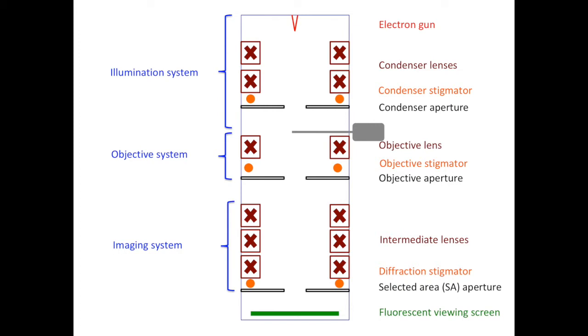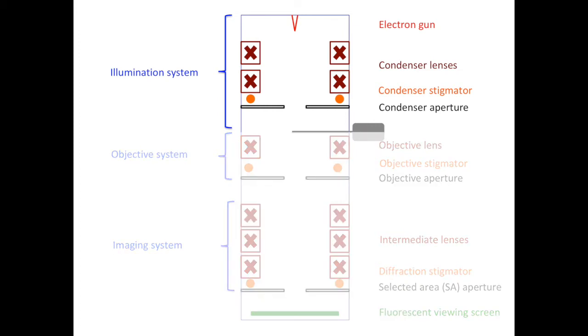In this video, we will only focus on the illumination system. The illumination system consists of the electron source, condenser lens, condenser stigmator, condenser aperture, as well as the very top of the specimen.